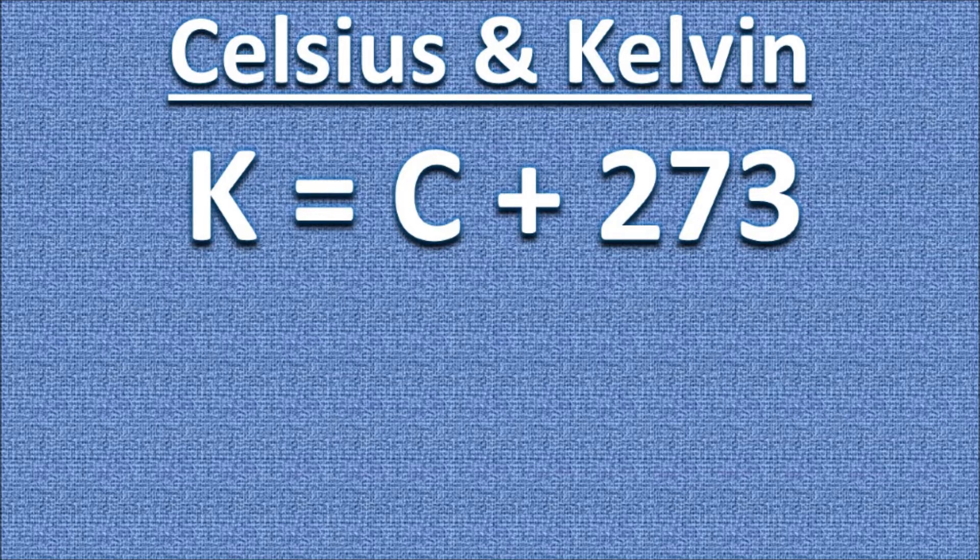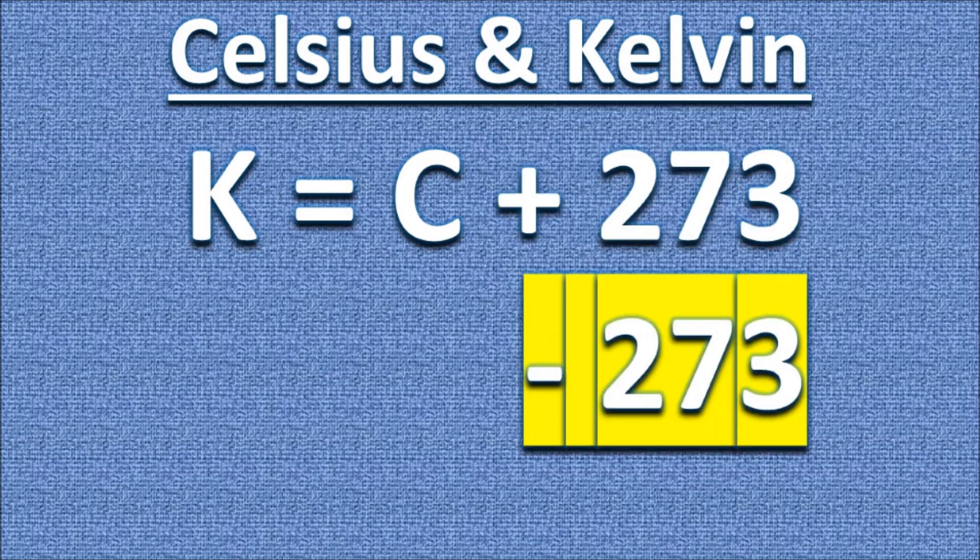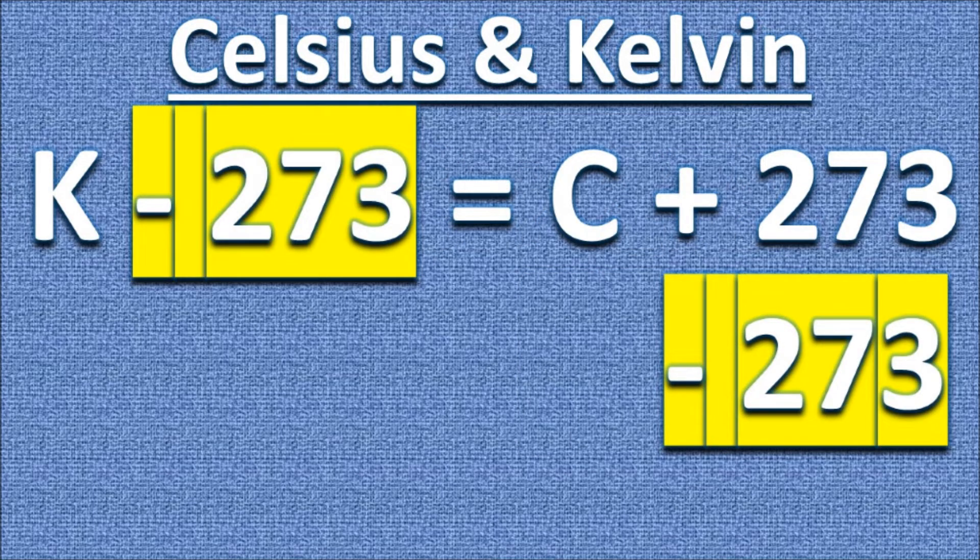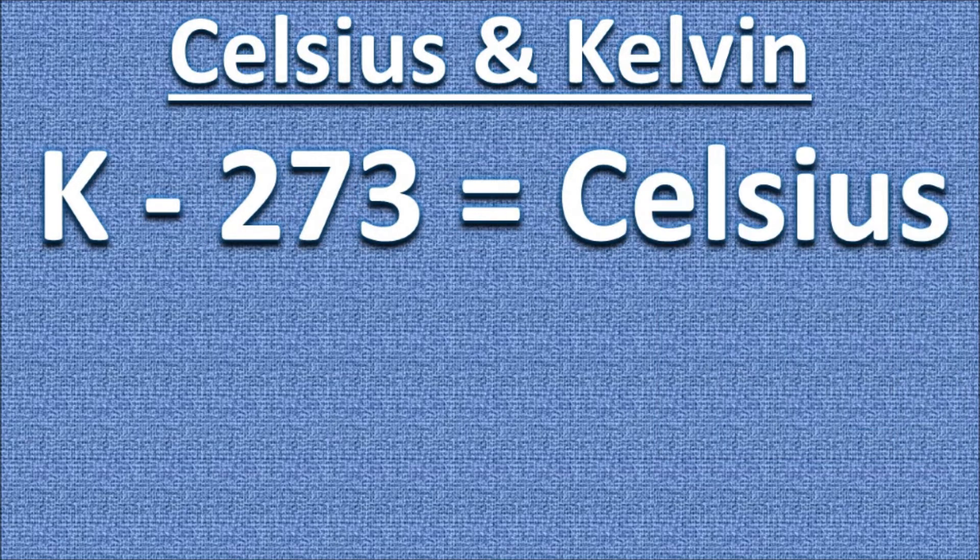So how does this formula work when you're looking for things for Celsius? So let's change the formula around. We need to move C by itself. So we add negative 273 to both sides. It cancels out over here on this side, which gives us our new formula.